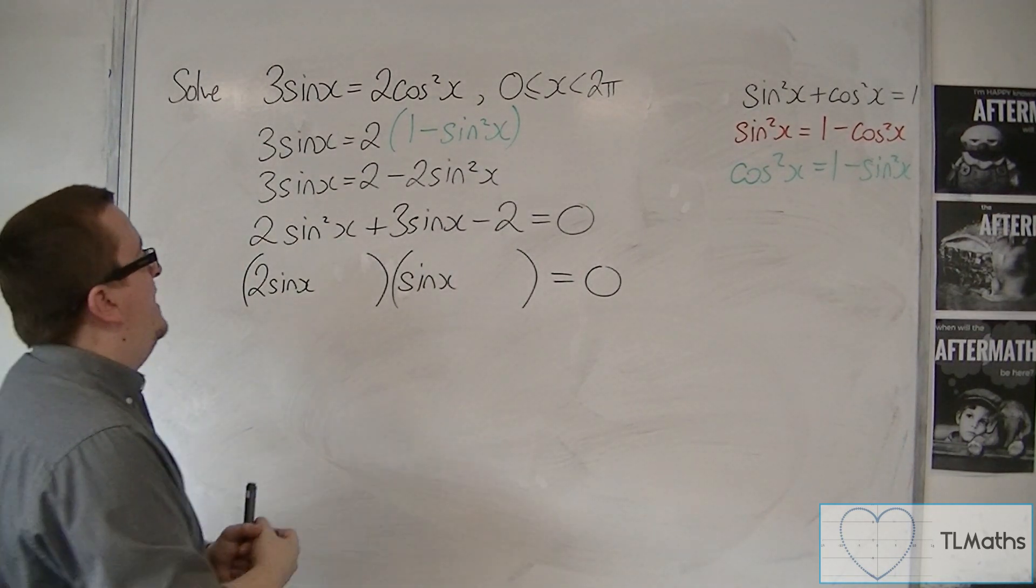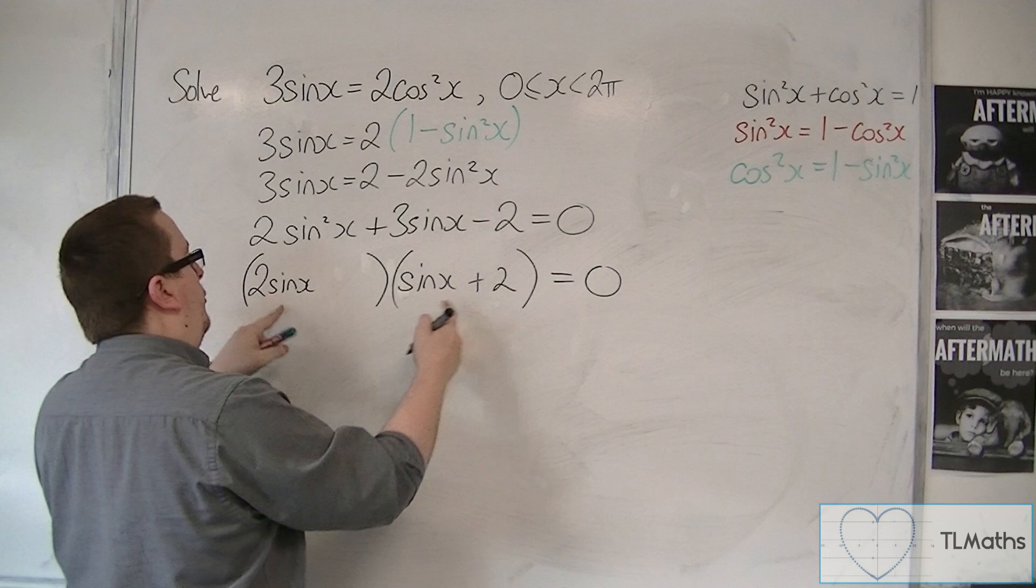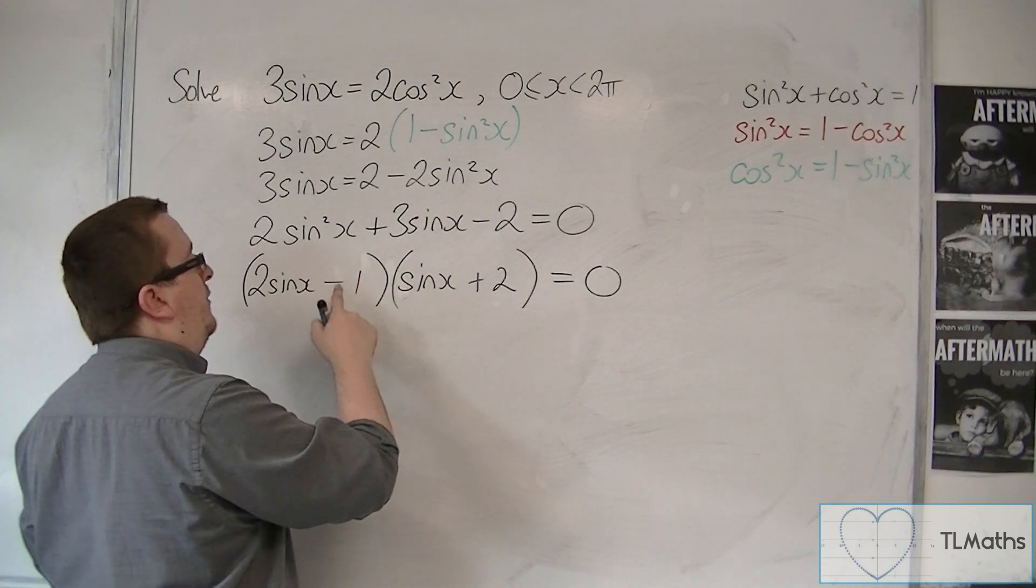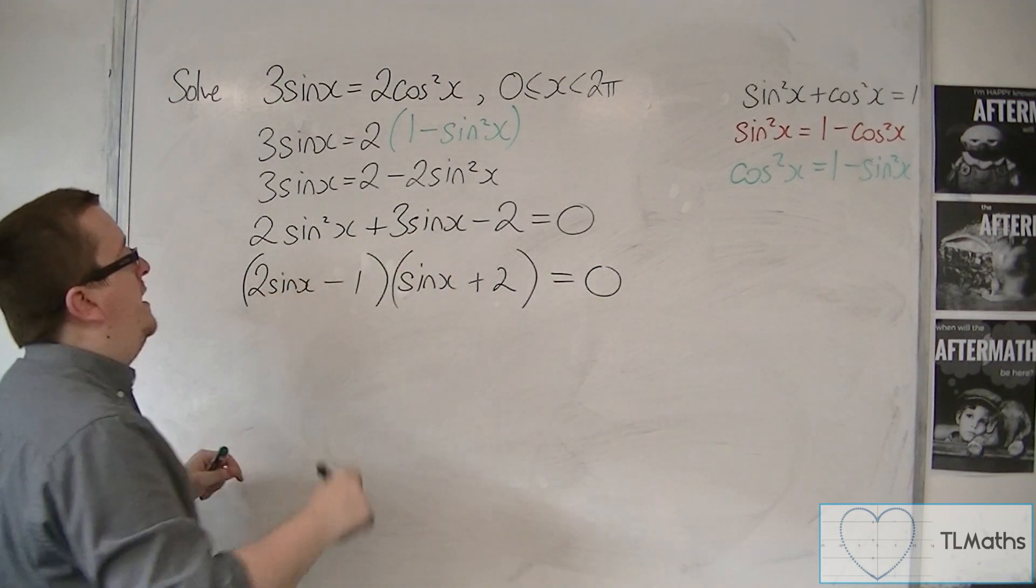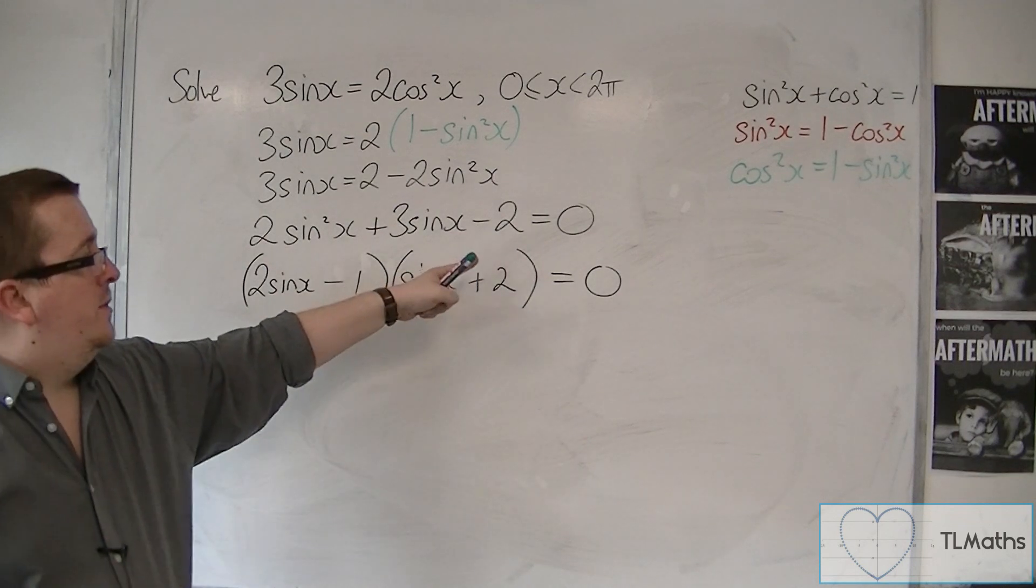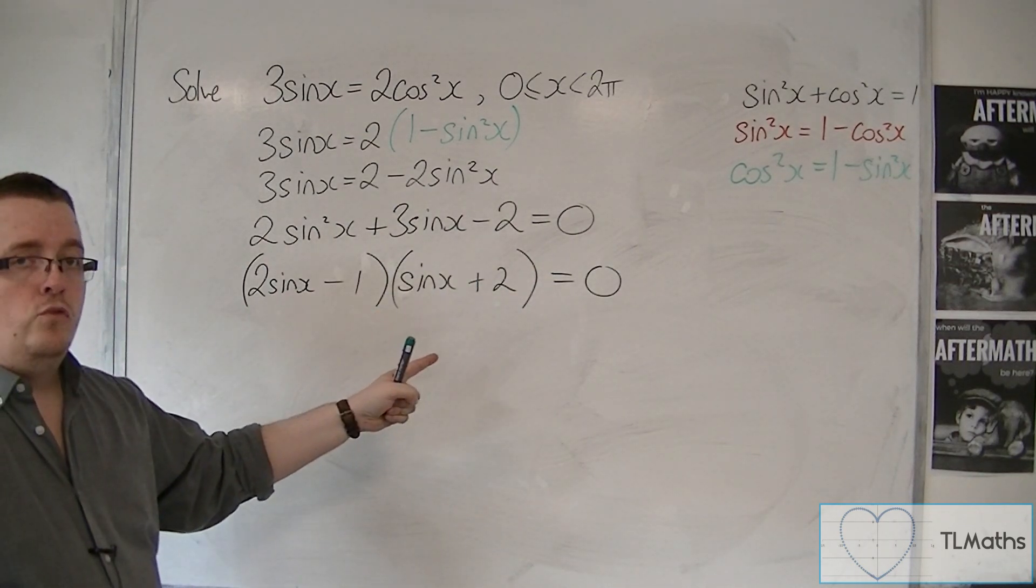So we're going to need to have plus 2 here in order to get 4 sine x and then minus 1 to subtract to sine x to get the 3. And the minus 1 times 2 is minus 2. So that is it factorised.